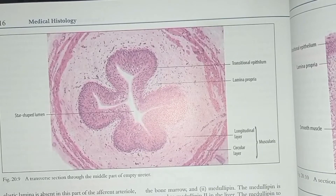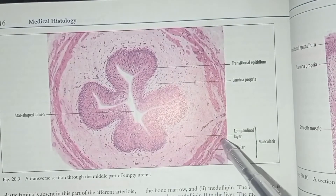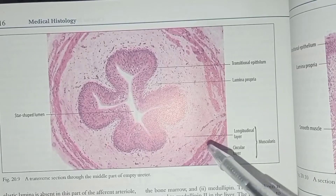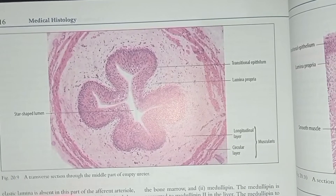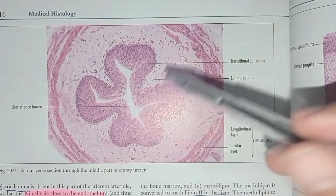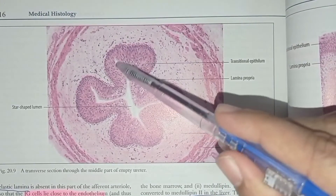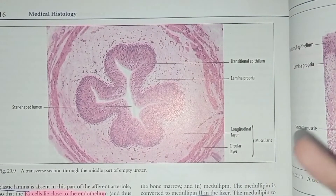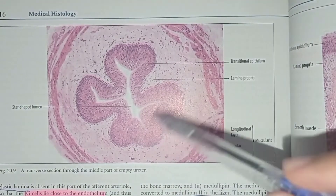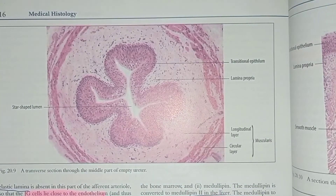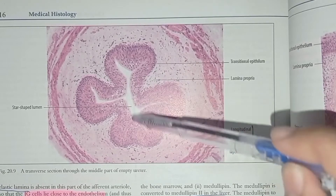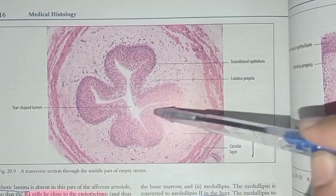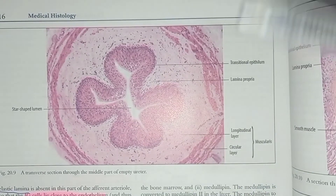We are going to talk about the histology of ureter. If we look at this illustration, we are looking at a very prominent feature. The prominent feature is the lumen of the ureter that is irregularly shaped, or somewhat star-shaped, with mucosal folds. This star-shaped lumen is the prominent feature of the ureter.